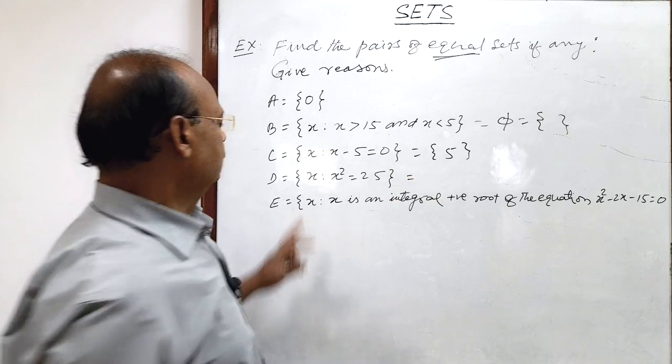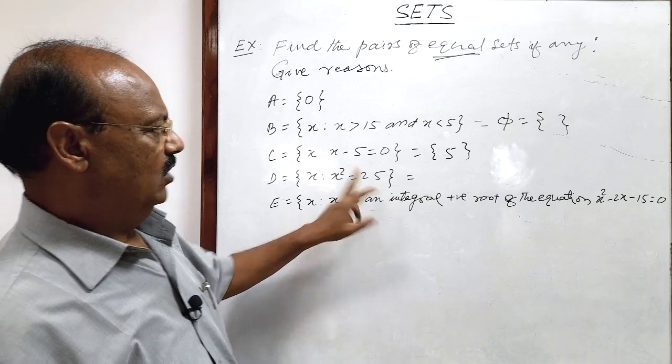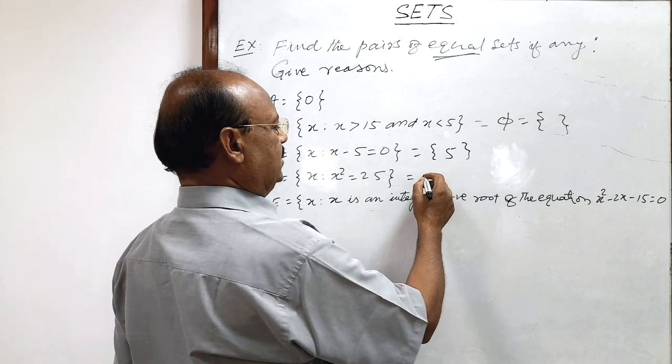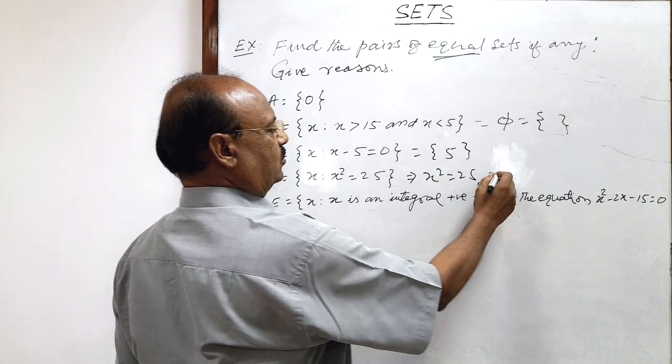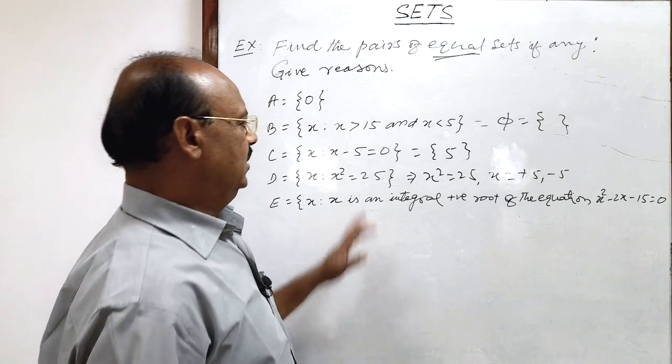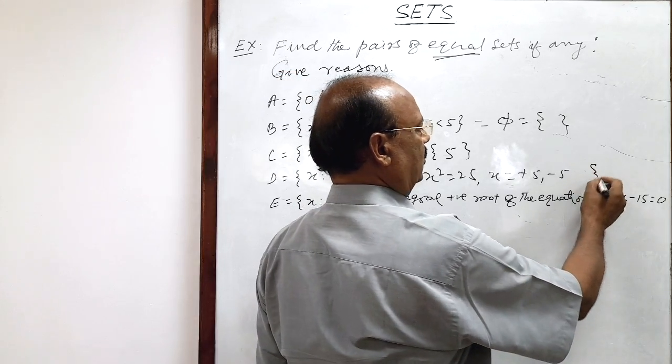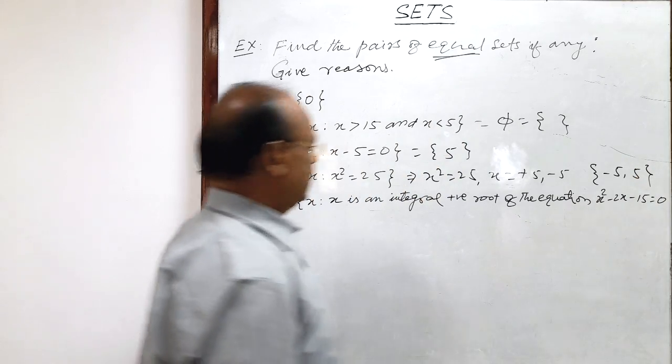And here x square is equal to 25. So x will be how much here? Here x square is equal to 25. So x is plus 5 as well as minus 5. So this set consists of two elements minus 5 and plus 5.